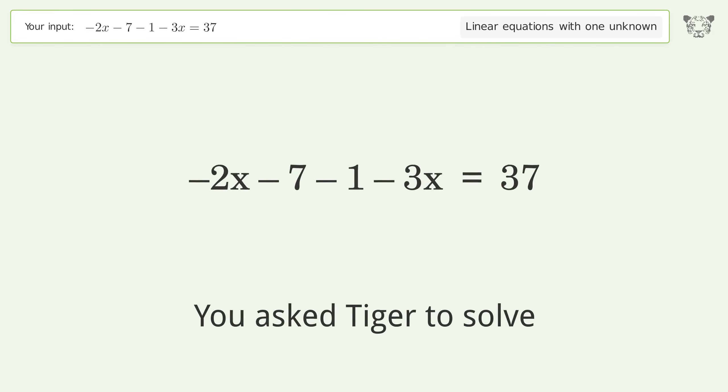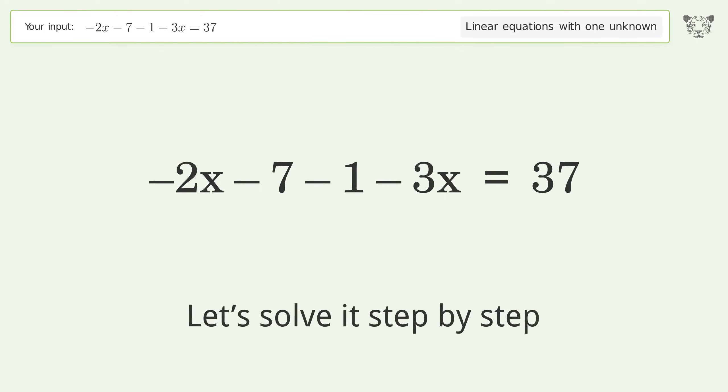You ask Tiger to solve this problem dealing with linear equations with one unknown. The final result is x equals negative 9. Let's solve it step by step. Simplify the expression and group like terms.